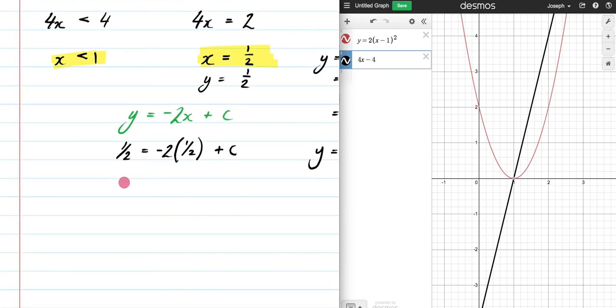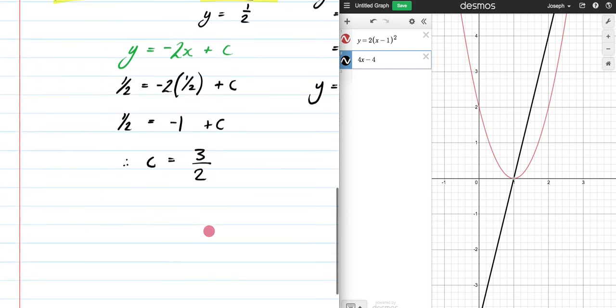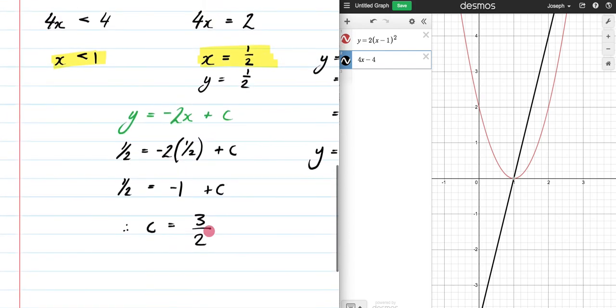Let's scroll down. Let's keep on answering this question. So this is going to be -1 + c. So therefore c is going to be equal to 3/2. That means if I were to tell you what this is going to be, I can get rid of this c right here and I can put in 3/2.